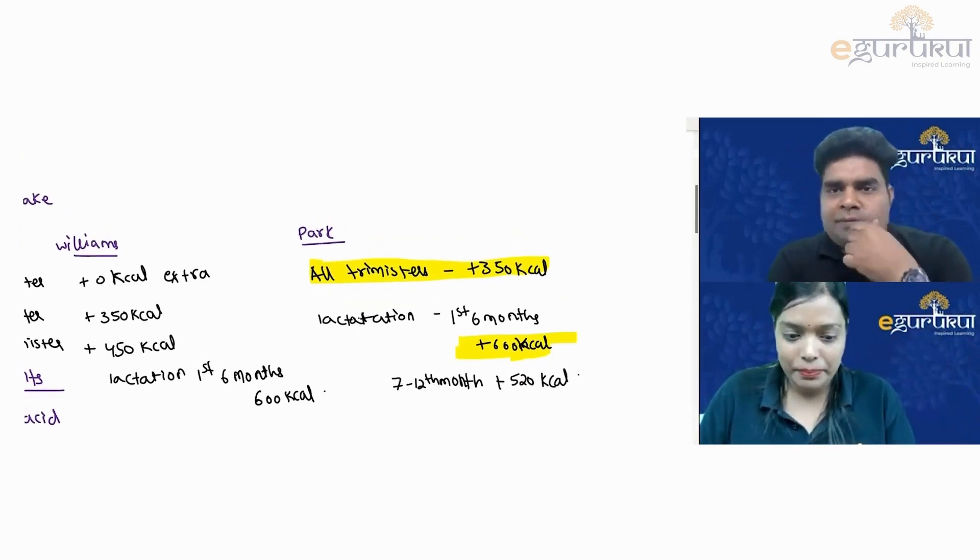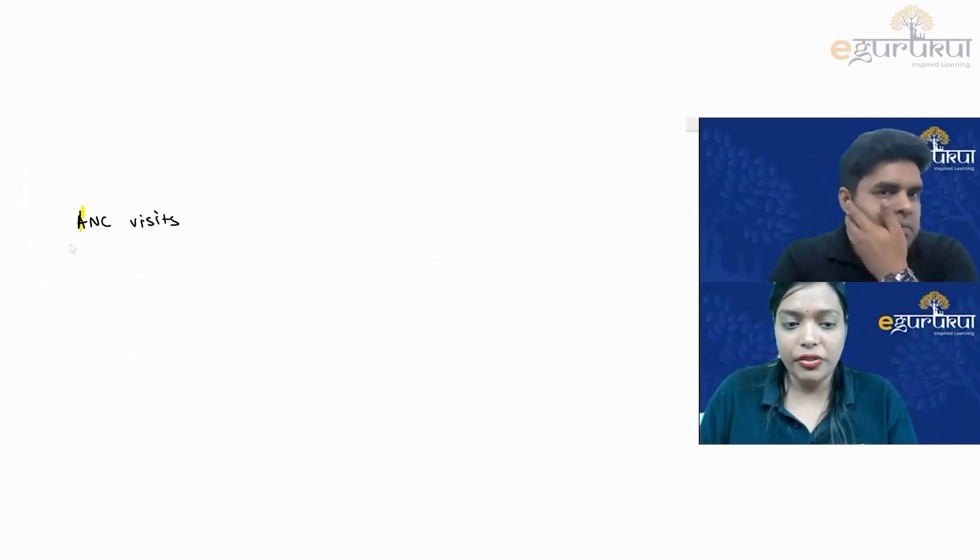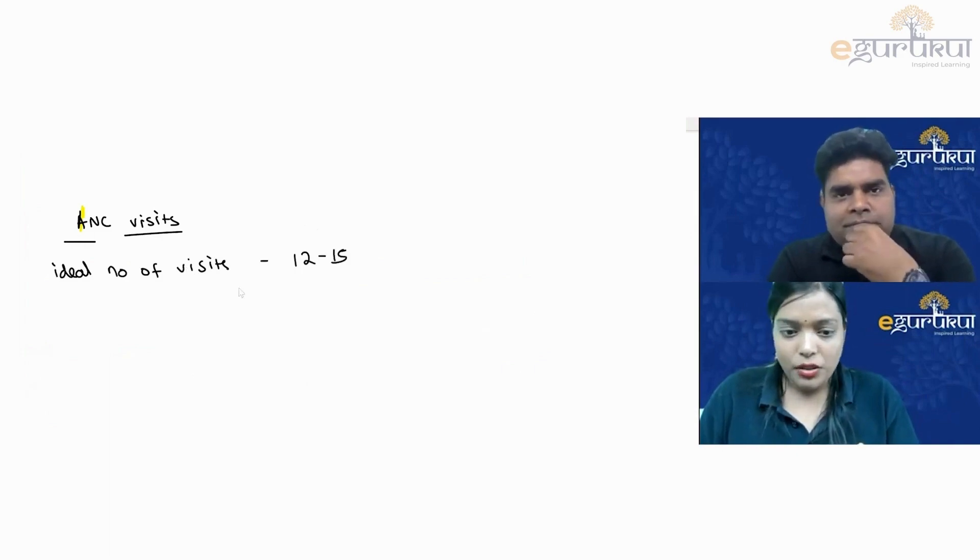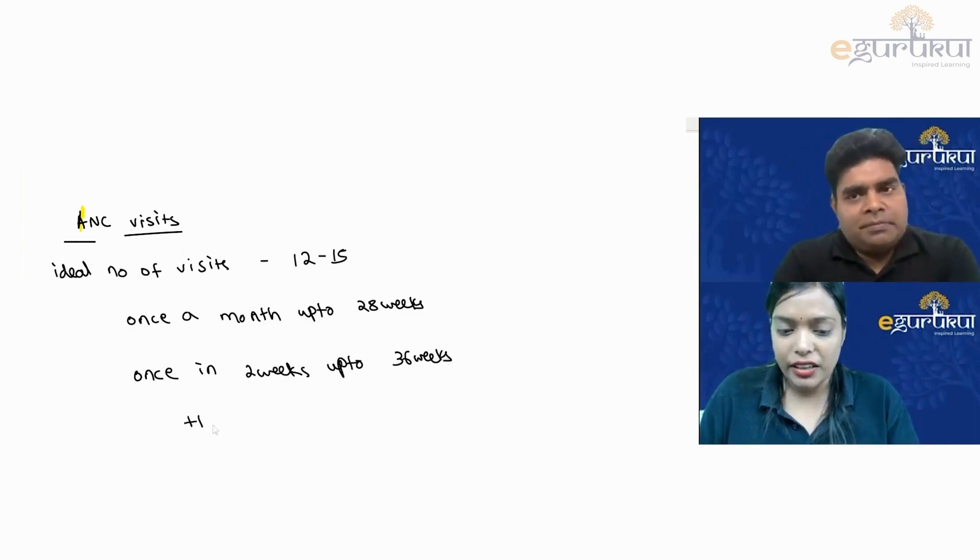Let us go to the second thing regarding the ANC visits. This is another question which has come in recent exams and students tend to have confusion. What is the ideal number of ANC visits? Both of us agree that it is 12 to 15. That is once a month up to 28 weeks, once in two weeks up to 36 weeks, and thereafter it is weekly.